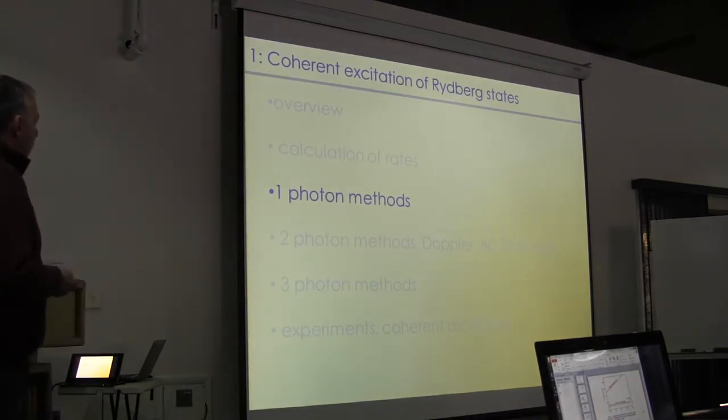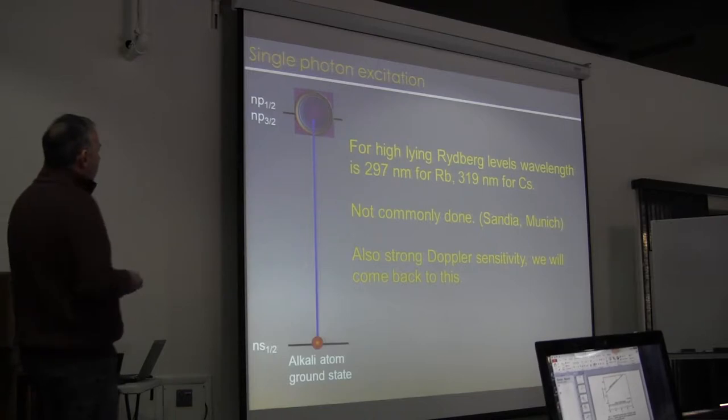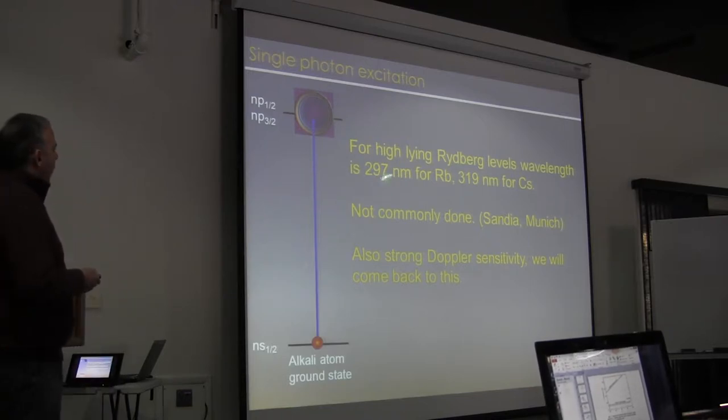So, one photon methods to access p-states. For high-n Rydberg levels, these are pretty short wavelengths. For the alkali atoms, 300, 320 nanometers for rubidium or cesium.